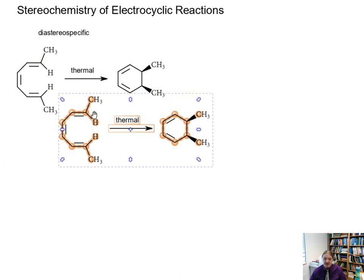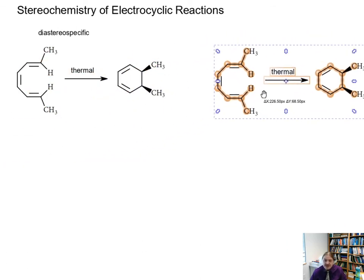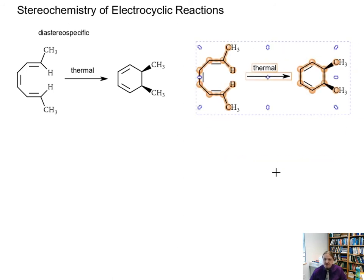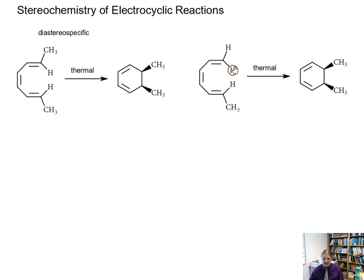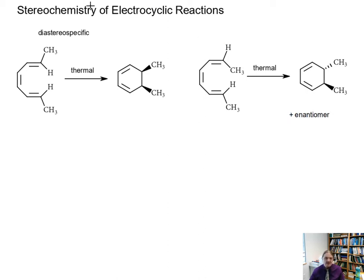This reaction is diastereospecific. The change in the stereochemistry of the reactants changes the stereochemistry in the product in a diastereomerically specific way. And because the reactant is not chiral, any time that we produce a chiral molecule we're going to produce the racemic mixture.